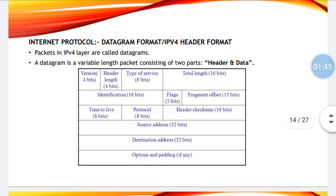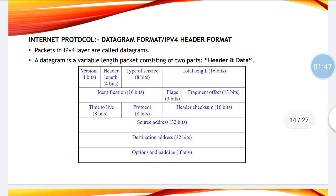Then we have fragment offset. The purpose of fragment offset is that at the receiver side, all the fragments should be reassembled. The bits allocated for it are 13 bits. TTL is 8 bits. If TTL has become 0, that means the validity of that packet has been exhausted, and the packet has to be discarded and sent once again.